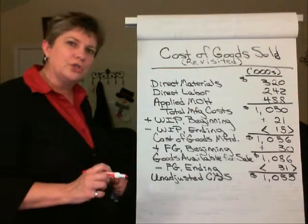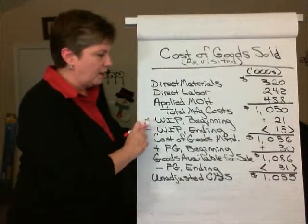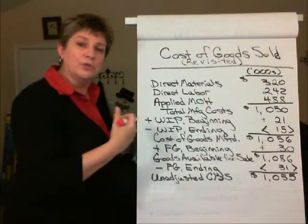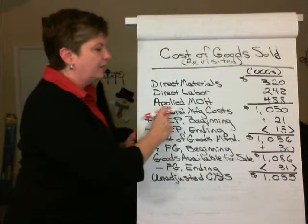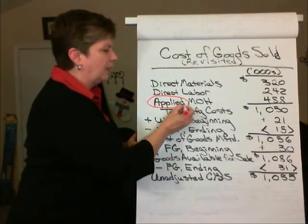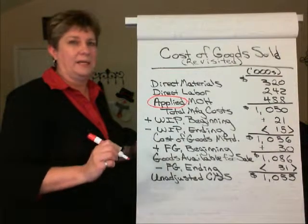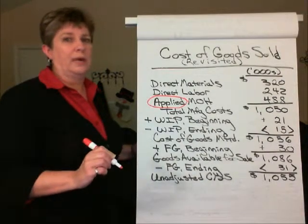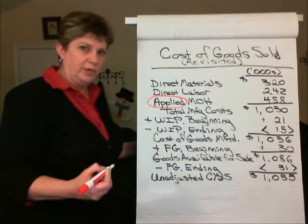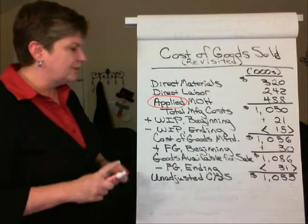There are a couple of things I want you to note about this. First of all, in the Total Manufacturing Cost section, we've got direct materials and direct labor, just as we've seen before. But the amount of overhead that we see here — notice that that is the applied overhead. That was the overhead based on the estimated predetermined overhead rate times the actual machine hours worked during the period, since machine hours was our allocation basis.